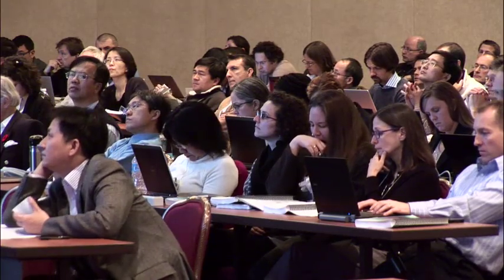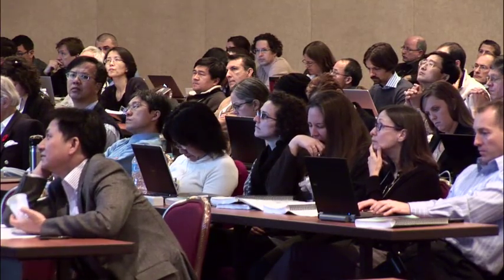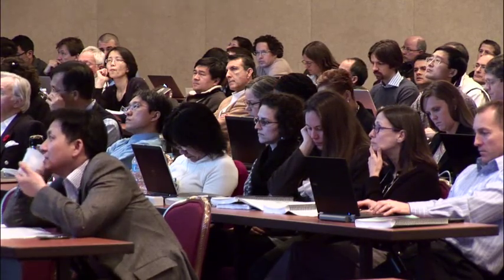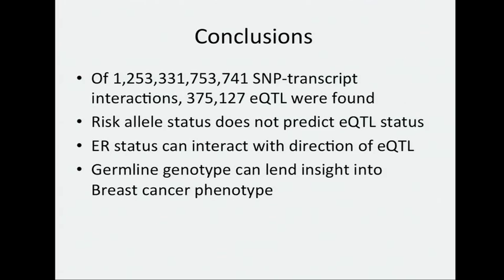Finally, of the 1.2 trillion SNP-transcript interactions, about 375,000 EQTLs were found. We found that risk allele status really does not predict EQTL status, but that ER status can interact with the direction of an EQTL. It does seem that germline genotype can lend insight into breast cancer phenotype.